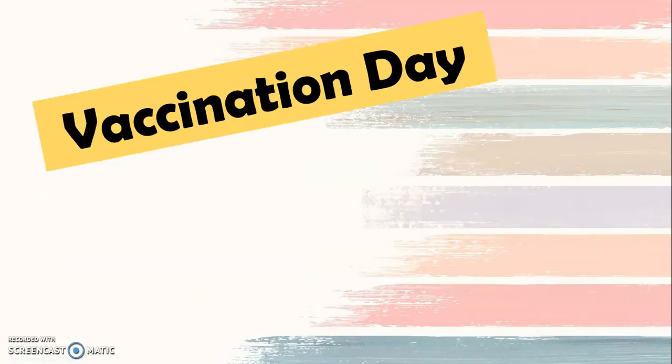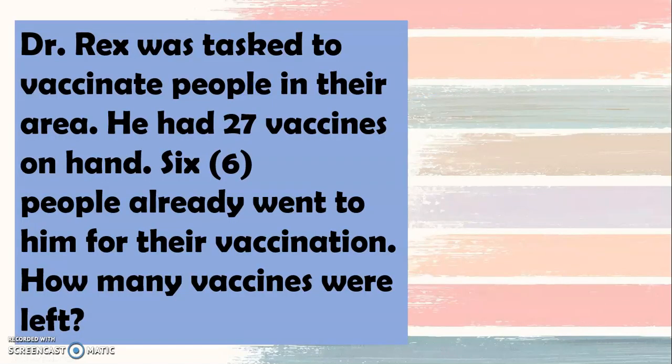So to start, we'll have the story entitled Vaccination Day. Dr. Rex was tasked to vaccinate people in their area. He had 27 vaccines on hand. Six people already went to him for their vaccination. How many vaccines were left?